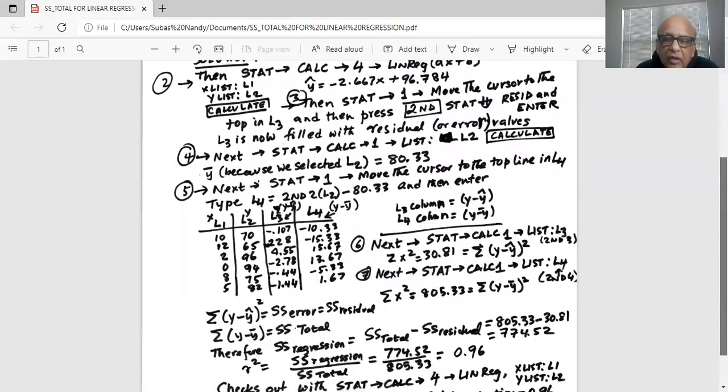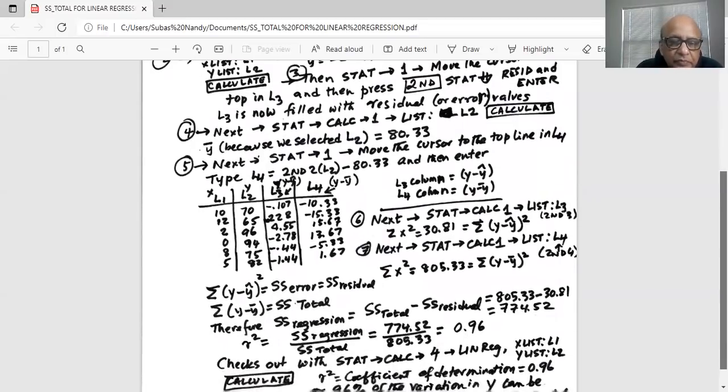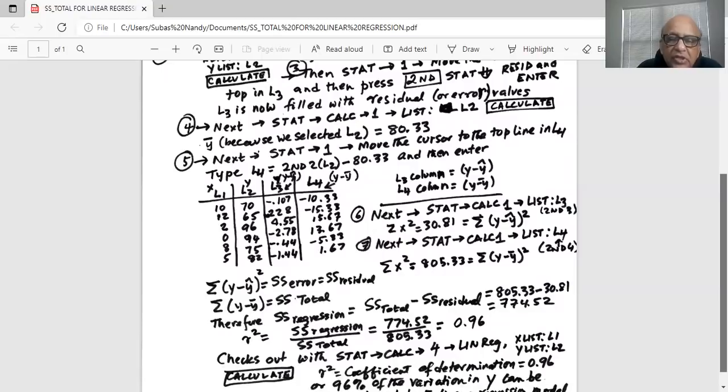So I'm again showing that sum of y minus y hat predicted y squared is sum square error or sum square residual, and sum of y minus y bar squared is sum square total. So sum square regression is sum square total minus sum square residual. Remember sum square total is sum of x square in the fourth column, which is 805.33, and sum square residual is sum of x square in L3, which is 30.81.